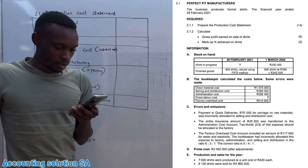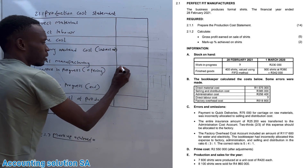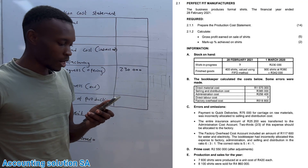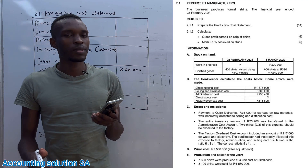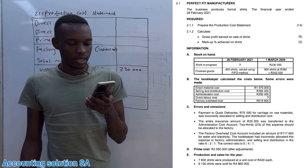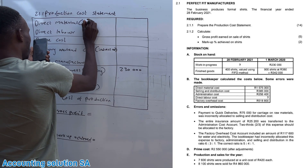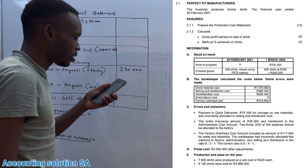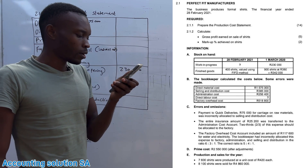They give us stock on hand and the balance at the beginning — work in progress is 280. You can start with whatever balance is available and record balance at the end later if we don't have it yet. Finished goods we'll handle when we calculate cost of sales. The bookkeeper calculated costs below, but some errors were made. Direct material before any error was 1 million 575 000.